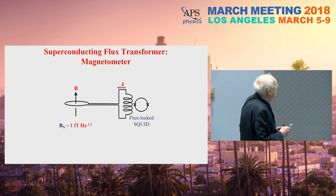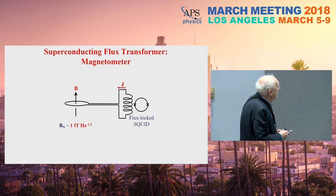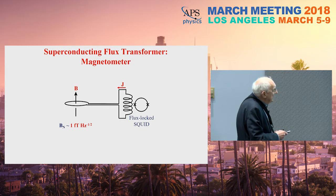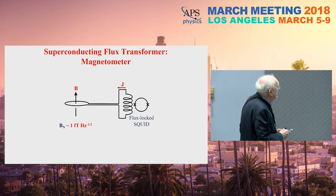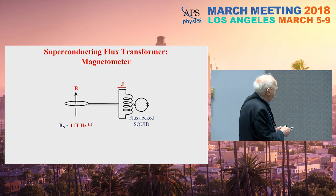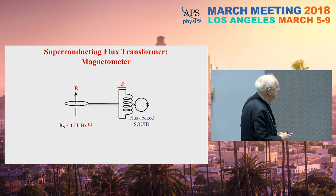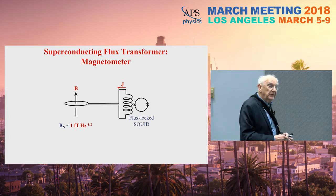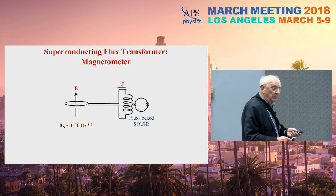A very popular application of SQUIDs is magnetometry. One can greatly enhance the magnetic field sensitivity by coupling a superconducting circuit containing a superconducting pickup loop to the input coil. Applying a magnetic field to this loop forces a current to flow around the circuit — due to flux quantization — coupling flux into the SQUID. A typical device today might have a magnetic field noise of about a femtotesla per root hertz.